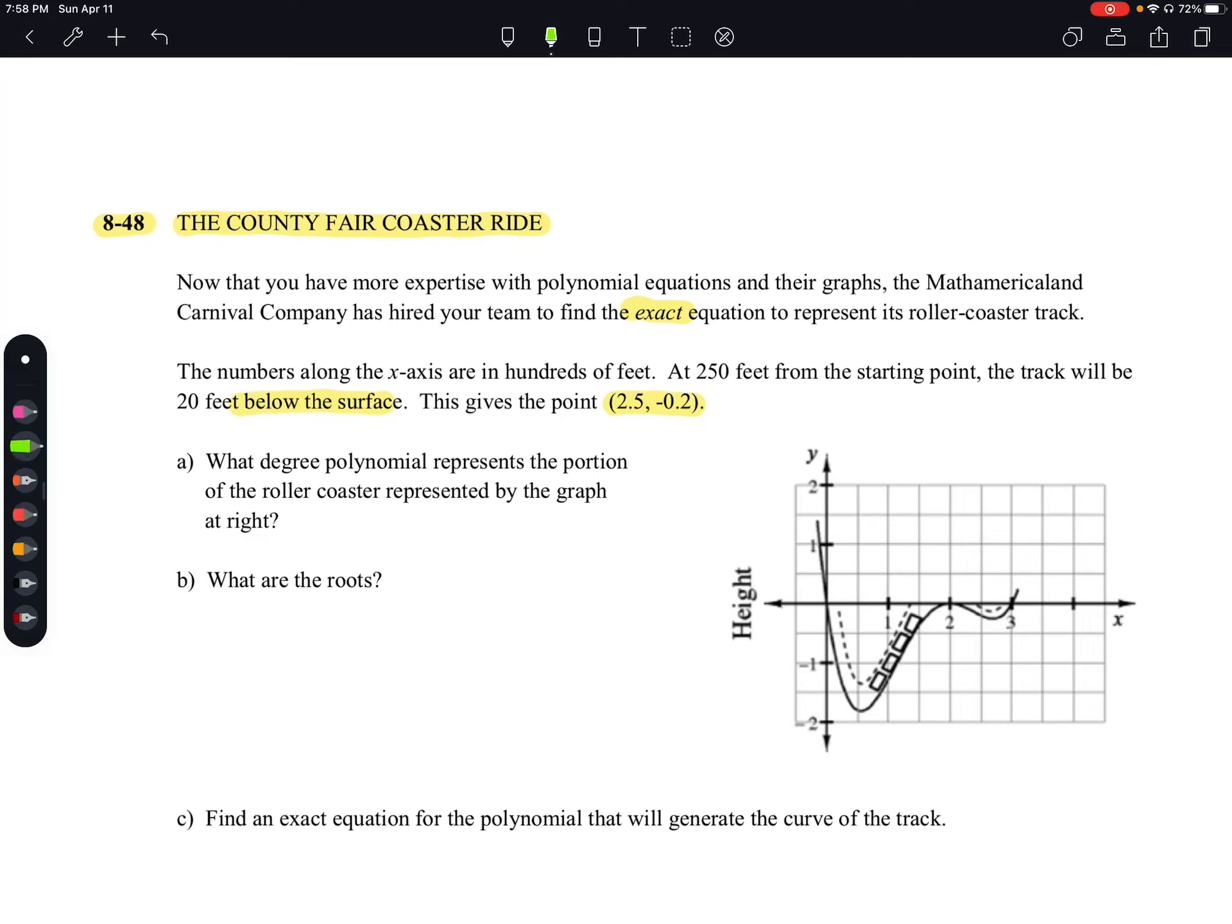To identify the degree, we're just going to use the roots right now. We've got a single root here, looks like we have a double root right here, and we have a single root right there. Our single root counts as 1 and our double root counts as 2, so right now our degree would end up being 4. We're going to say our degree is equal to 4.